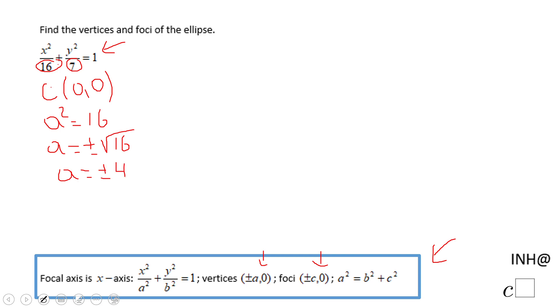Which tells us the vertices are (4,0) and (-4,0).